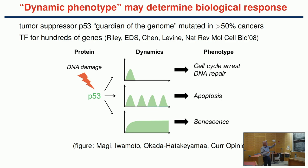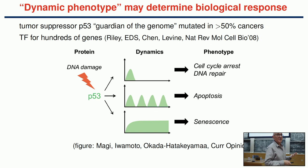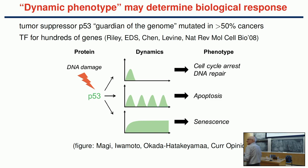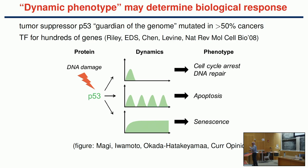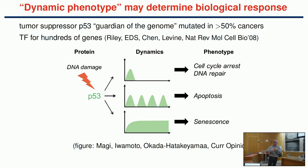One of the most important proteins involved in the progression of cancer is P53. It's been discovered that the transient response to some sort of stress in a cell—whether there are sustained oscillations, single spikes, or a constant response—and the frequency of those transient responses affects whether a cell goes into cell cycle arrest, and so forth.